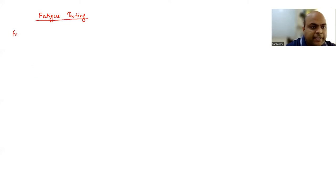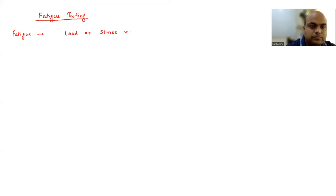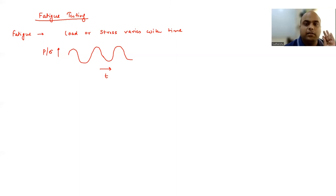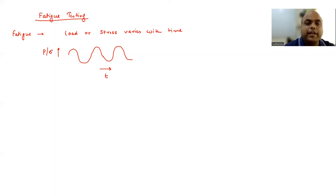When we talk about fatigue, the load or stress is going to vary with time. If we have time on the x-axis and stress (P or sigma) on the y-axis, it varies with respect to time, and whenever that happens we say the material is under fatigue loading. It is very important to understand fatigue loading because most of the failures you observe happen because of fatigue loading.